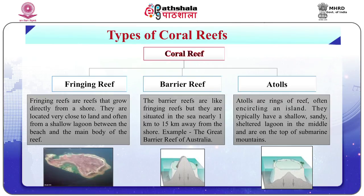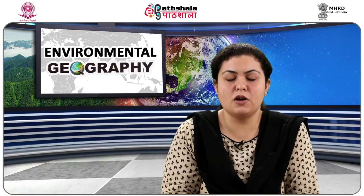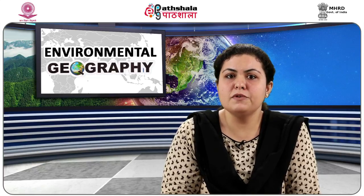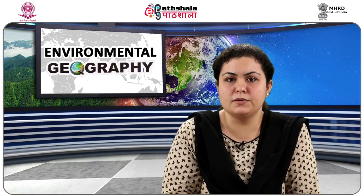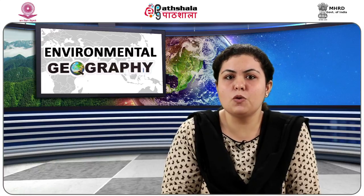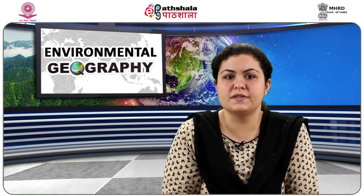Let us now learn about the types of coral reefs. First is the fringing reef. Fringing reefs are reefs that grow directly from a shore. They are located very close to land and often form a shallow lagoon between the beach and the main body of the reef, as shown in figure 1. A fringing reef runs in a narrow belt 1 to 2 km wide. This type of reef grows from the deep sea bottom, with the seaward side sloping into the deep sea. This reef is the most common reef among all the reefs.